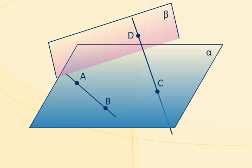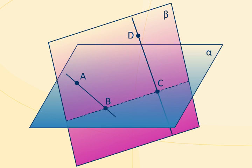Assume that there exists the plane beta with the lines AB and DC on it. Then the line AB and the point C lie on the plane beta.